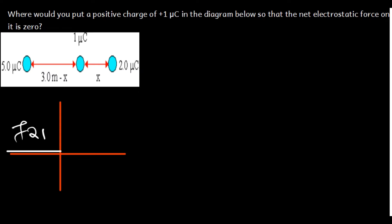Next, we are going to have 1 microcoulomb and 5 microcoulomb — they are both positive. What we expect is that the 1 microcoulomb is going to be repelled. So this is going to be the force on charge 1 due to charge 5, which is F₅₁.